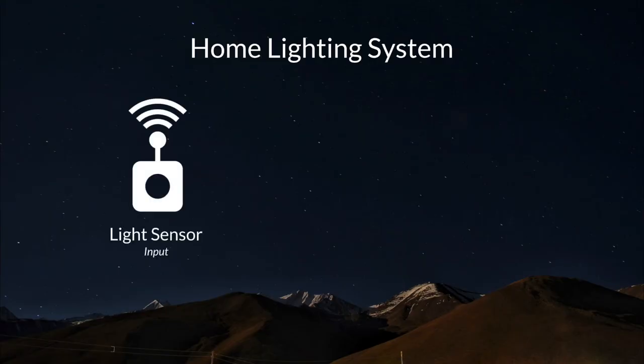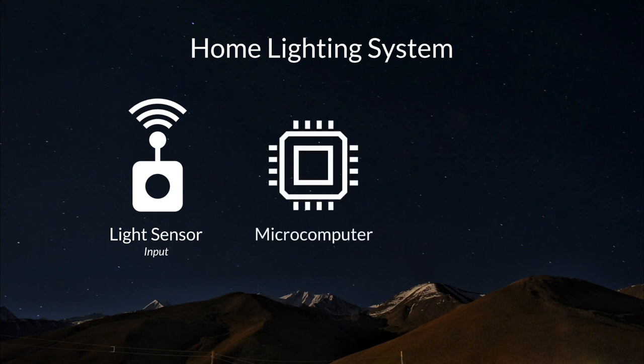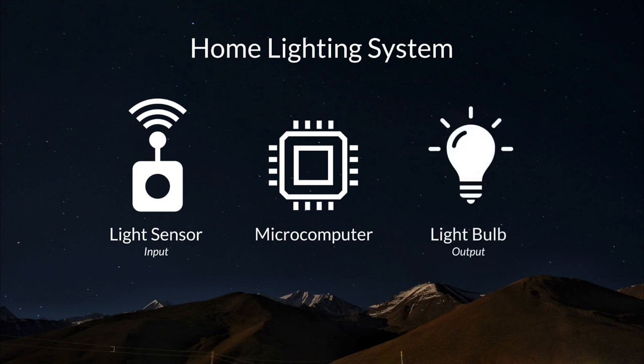I then showed students a home light system to illustrate how devices we use every day gain information through sensors and process that information to generate an output. In this system, the light sensor detects the intensity of the light level in the room and sends that information to the microprocessor. If the light level is too low, especially at night, the microcomputer signals the lights to turn on.